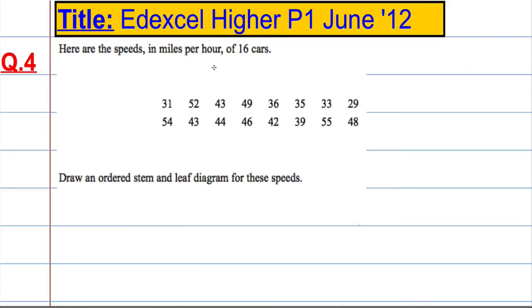Question four, we're given the speeds in miles per hour of 16 cars, and we're asked to draw an ordered stem and leaf diagram for these speeds.